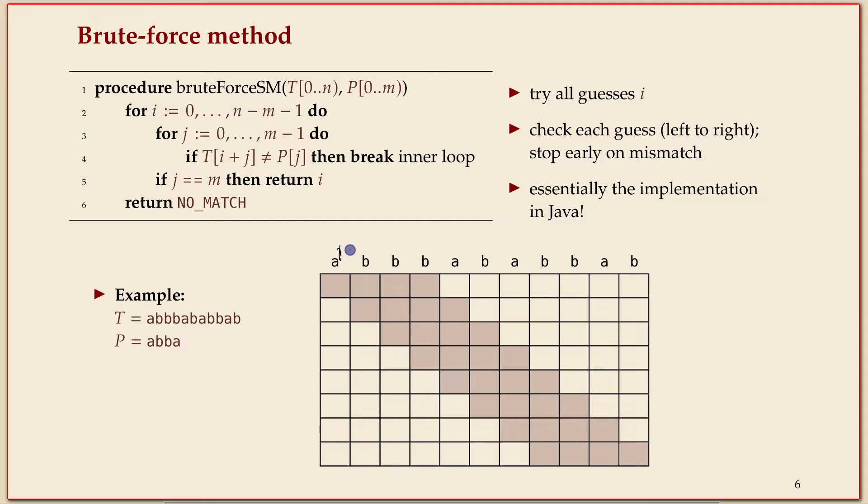The starting position here is i, that's zero, one, two, and so on. You have to do at most four checks because that's the length of the pattern. So if we start comparing here: a matches, b matches, b matches, but then we have another a, so we have a mismatch here.